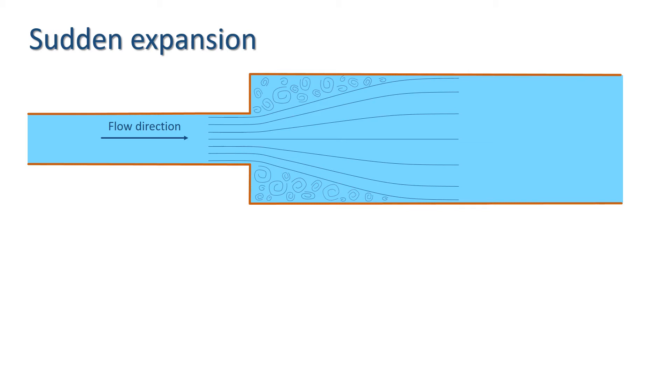For our second example, we'll look at the flow through a sudden expansion in a pipe. Flows of this type experience separation from the boundary, and that extends some distance downstream. In this region of separation, turbulent eddies form, which cause energy losses.